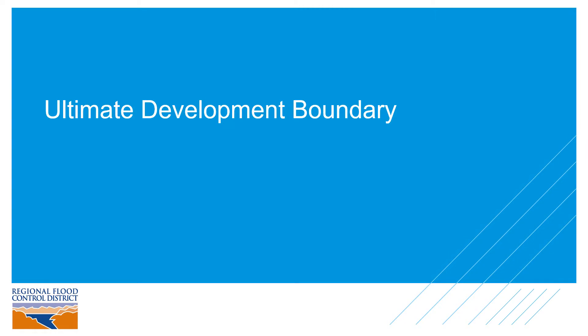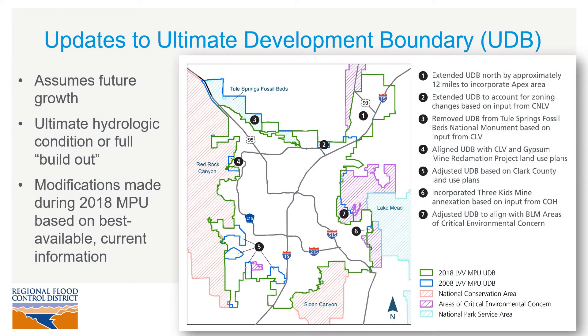First, let's go over the ultimate development boundary. For planning purposes, the MPU is based on the assumption that all available land in the Las Vegas Valley has been developed. This is helpful because it ensures that flood control facilities we design and build today will still have adequate capacity well into the future as growth and development occurs.